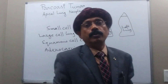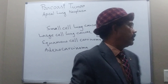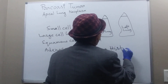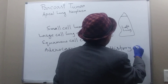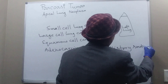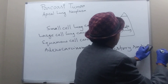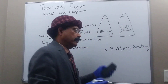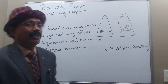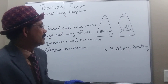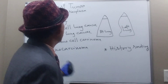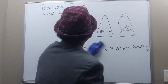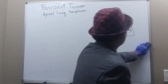It usually occurs in an adult person who has a history of smoking. History of smoking for a long time is an important factor, and the typical patient is a chain smoker.